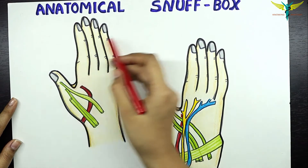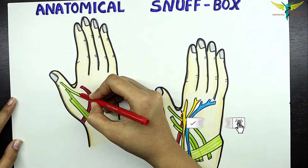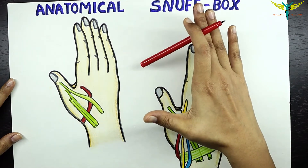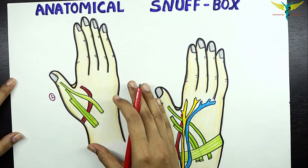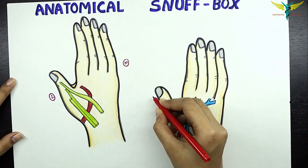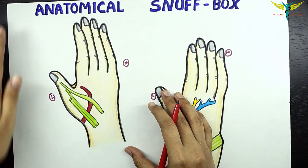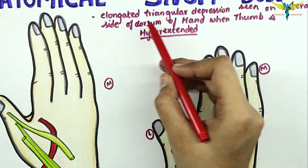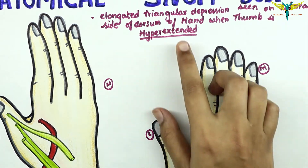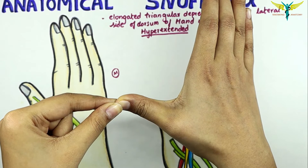In this video, let's learn about the anatomical snuff box. The anatomical snuff box is an elongated triangular space or depression that is seen on the lateral side of the dorsum of the hand when the thumb is hyperextended. This is the lateral side when the hand is turned dorsum, and this is the medial side. When the thumb is extended more towards the lateral side, you can see the anatomical snuff box.